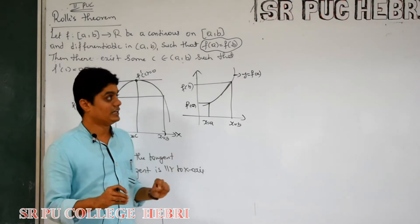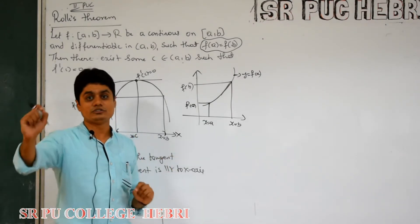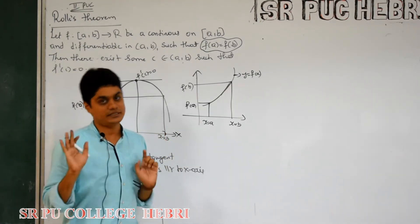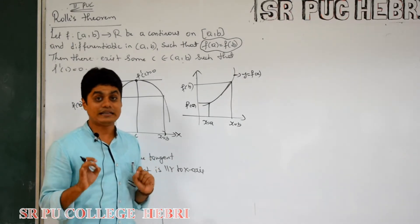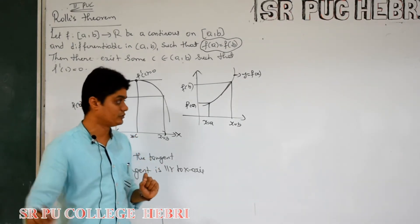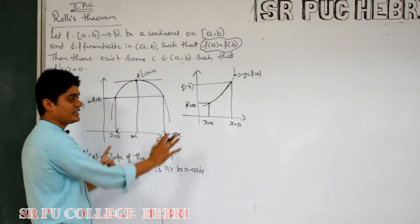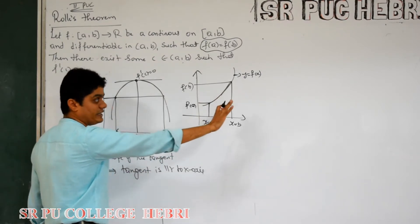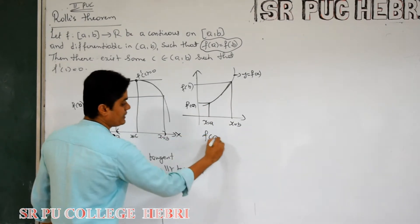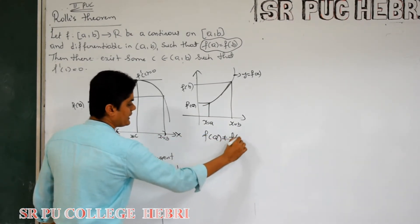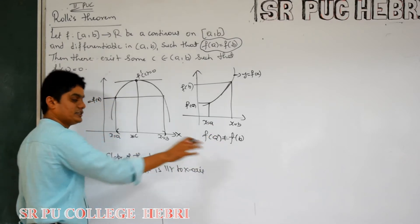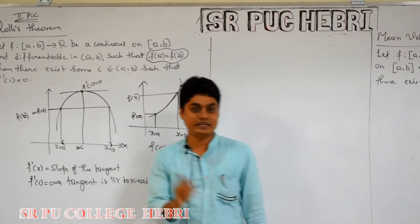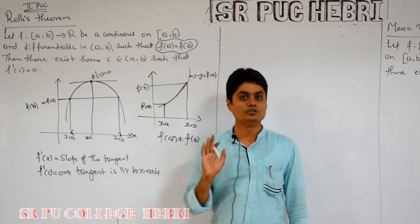In the exam, you will get a question of this kind: State Rolle's theorem and verify Rolle's theorem. That I will explain through an example. One question is guaranteed — State Rolle's theorem and verify Rolle's theorem. The reason the theorem may not hold could be that f(a) is not equal to f(b). I will now take one example to show how to verify.